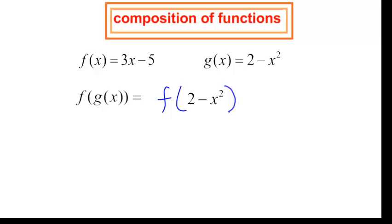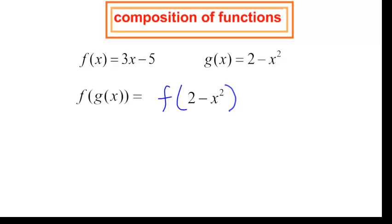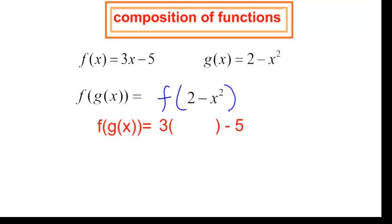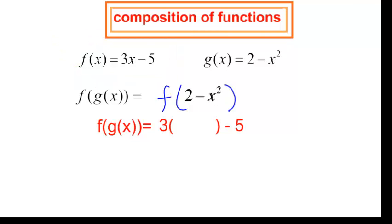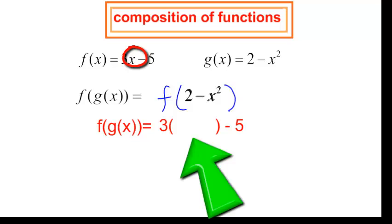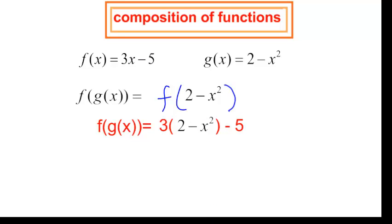So f at g of x equals f at 2 minus x squared. I take 2 minus x squared and plug it in wherever I see the variable in the f function. The f function is 3 times the variable minus 5. I will do distributive property: 3 times 2 is 6, and 3 times x squared — don't forget that negative — then subtract 5. I can simplify: negative 3x squared plus 6 minus 5.